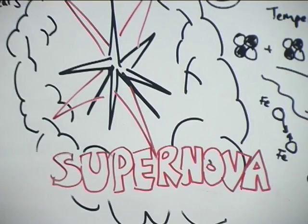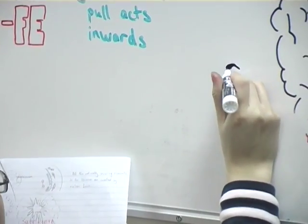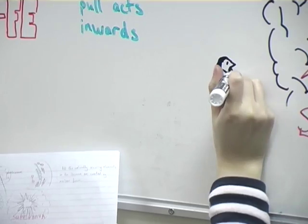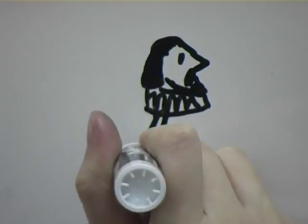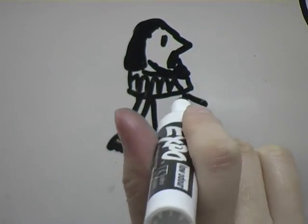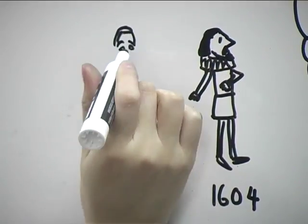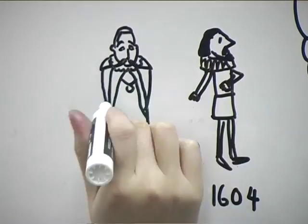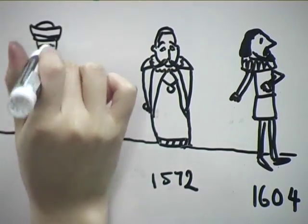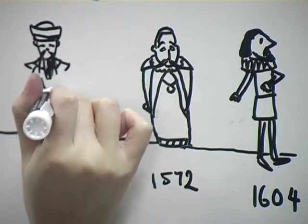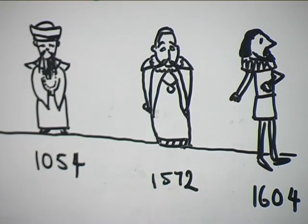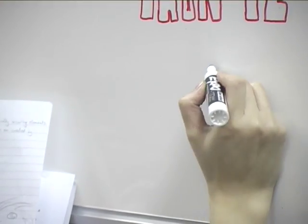Supernovae can be observed in the sky with the naked eye because they are so bright. The youngest supernova observed in our galaxy was seen by Johannes Kepler in 1604, and Tycho Brahe recorded seeing one in 1572. The earliest record of a supernova is from 1054. This produced the Crab Nebula and was observed by Chinese astronomers.